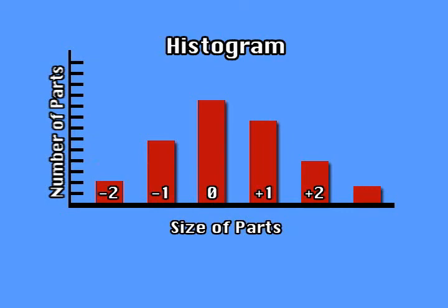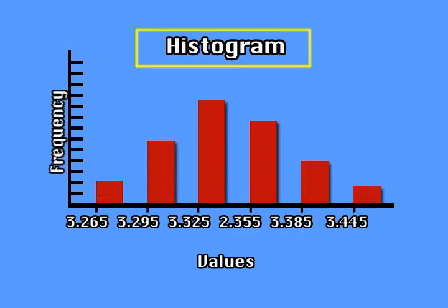Once all the parts are sorted in this way, we can graph the result. The finished chart looks like this. It will show you the spread of part sizes, which is referred to as the distribution.